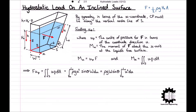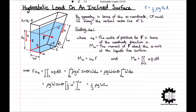The integral of u squared with respect to u is equal to one third u cubed. So therefore we get f times up is equal to rho g w sine theta times one third u cubed with boundary limits of 0 and l0. And then substituting in our boundary limits, we have one third rho g w l0 cubed sine theta.